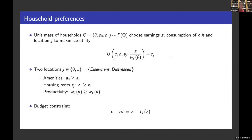We consider a world with a unit mass of households characterized by their skill and preferences for location. Their utility is derived from consumption of a traded good, consumption of housing, the level of amenity or quality of life in the region AJ where they live, and a disutility of labor. The effort they exert is income divided by the wage rate, which is a function of their skill theta and location, since cities can be differentially productive. Households also draw an idiosyncratic preference shock for various locations, epsilon.